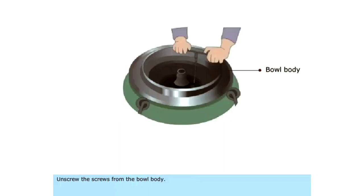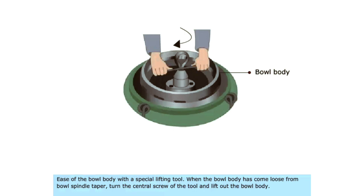Unscrew the screws from the bowl body. Ease off the bowl body with a special lifting tool. When the bowl body has come loose from bowl spindle taper, turn the central screw of the tool and lift out the bowl body.